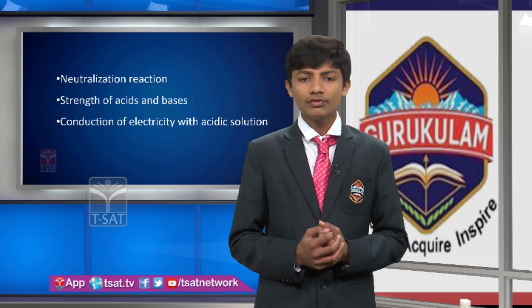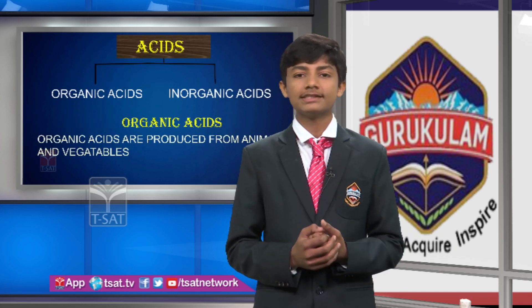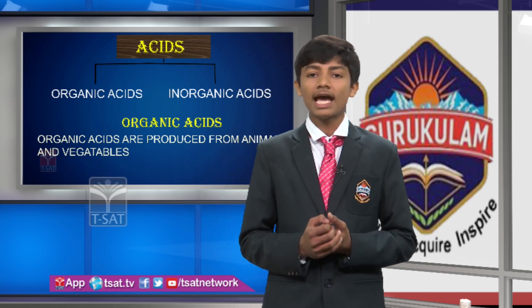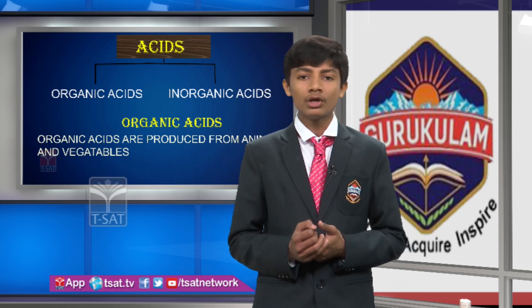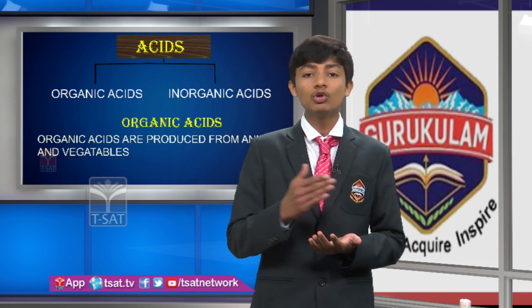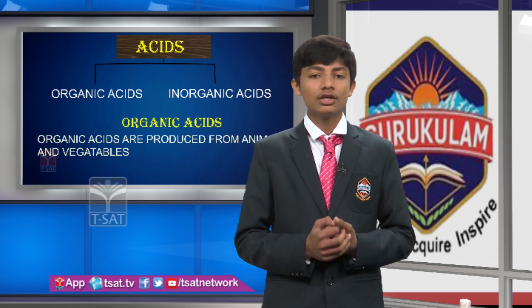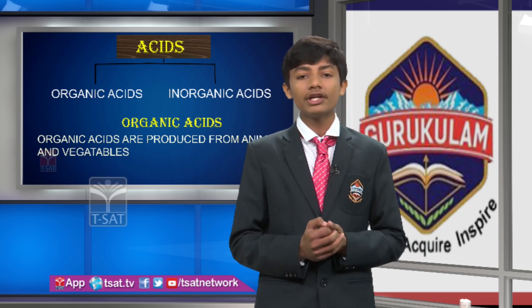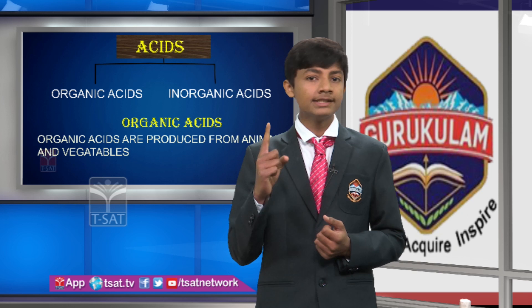Acids are derived from the Latin word 'acidus,' meaning sour. The things which are sour in taste and turn blue litmus to red litmus are known as acids. Bases are bitter to taste and turn red litmus to blue litmus. Acids are mainly divided into two types: organic acid and inorganic acid.